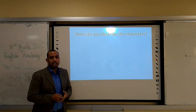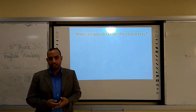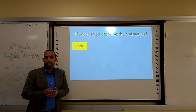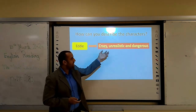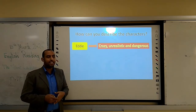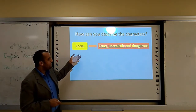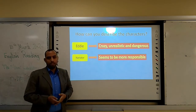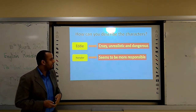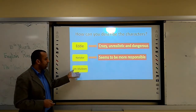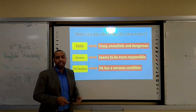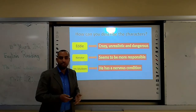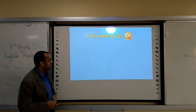How can you describe the characters when you read the story? What about Eddie? He is called Crazy Eddie. Eddie is crazy, unrealistic, and dangerous because he made crazy adventures and has a lot of crazy ideas. What about the narrator? The narrator seems to be more responsible — he is not crazy like Eddie. Mr. Muldoon, Eddie's father, has a nervous condition, of course because of the crazy adventures of his son Eddie.